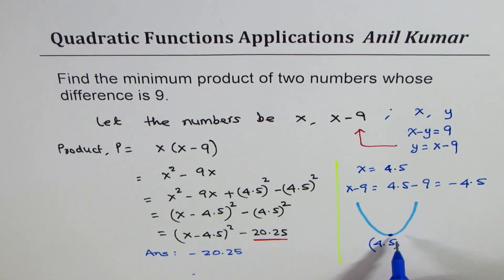And the Y value is minus 20.25, and since it opens upwards we are talking about vertex representing a minimum. So I hope all the concepts are clear, thanks and all the best.